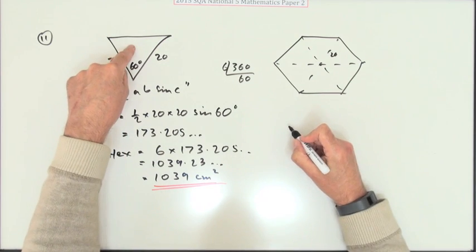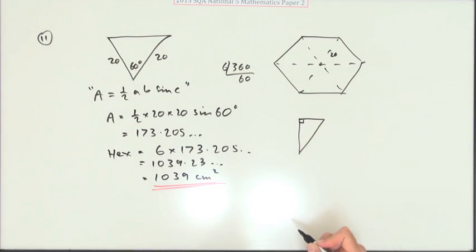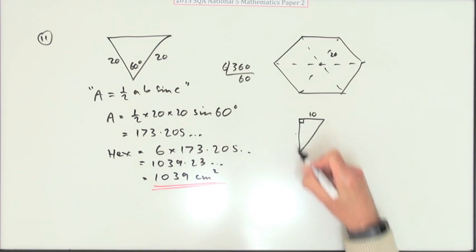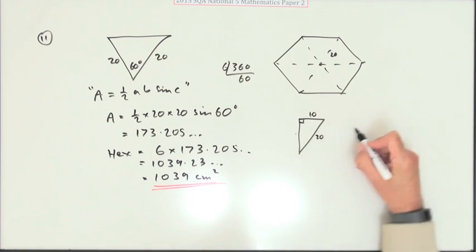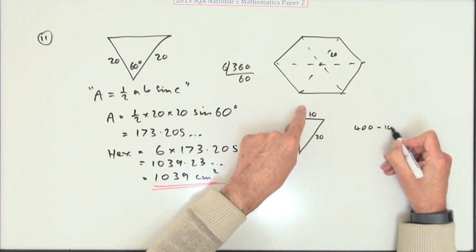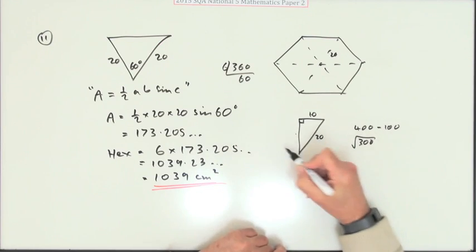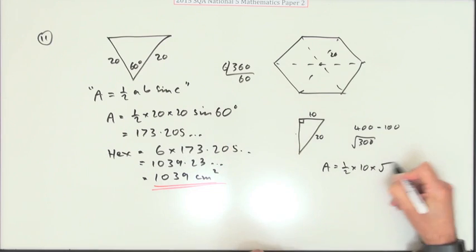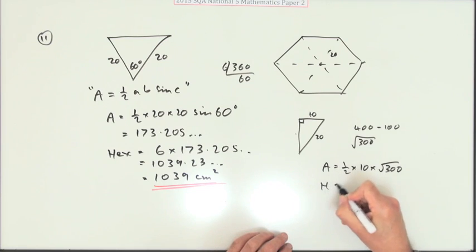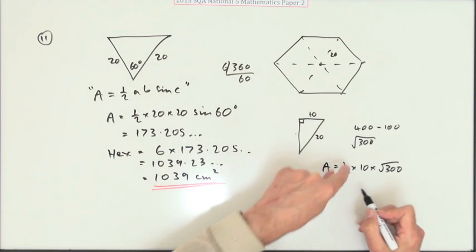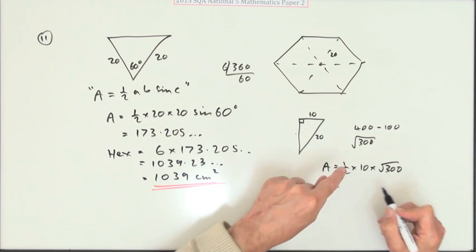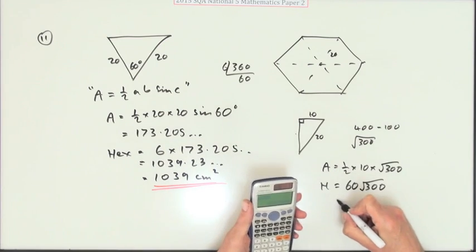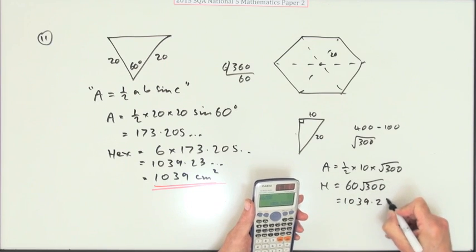Now the alternative would have been to take that triangle and cut it in half so you've got a right angle triangle, and then you could just use area base times height. The base is easy - it's just 10. You'd have to work out the height using Pythagoras, so that would have been 20 squared minus 10 squared, which is 300. The area of that triangle is a half of 10 times root 300. The area of the whole hexagon would be 12 of these little slivery triangles, so it would be 60 times the square root of 300, which is the same answer: 1039.23 and so on.